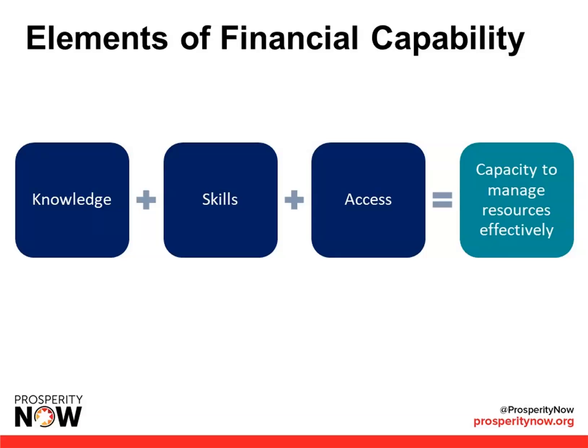Financial capability requires knowledge, skills, and access. Over time in our country, individuals have become increasingly responsible for their own long-term financial capability and security. In the past, employers would provide defined benefit retirement plans that ensured a lifelong stream of income. But today, workers are largely responsible for ensuring adequate retirement savings, mostly through personal savings or defined contribution plans. And we've seen it's increasingly difficult for Americans to save enough to manage their long-term financial future.